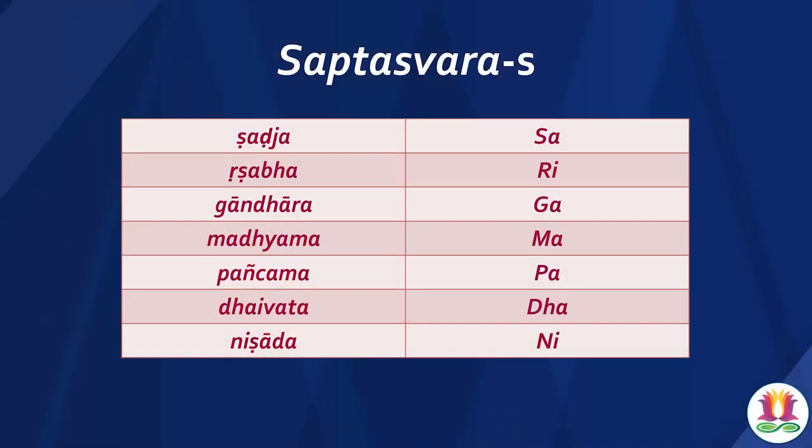Going by Sangeet Ratnakara again, Swaras are created out of Shrutis and they are seven in number: Shajja, Rishabha, Gandhara, Madhyama, Panchama, Daivata and Nishada. And their symbols are Sa, Ri, Ga, Ma, Pa, Dha, Ni.